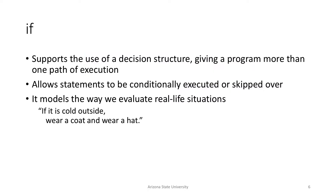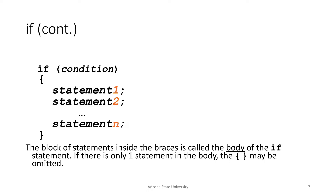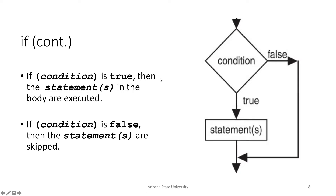We talked about the if statement: if something in this parenthesis — this condition — is true, then we execute the code within the curly brackets corresponding to that if statement. If the condition evaluates to true, we execute the statements within the curly brackets; if not, we skip them. For a flowchart — if you look at the condition, it either is true or false, then we either skip over the statements in the false case or go through them in the true case.